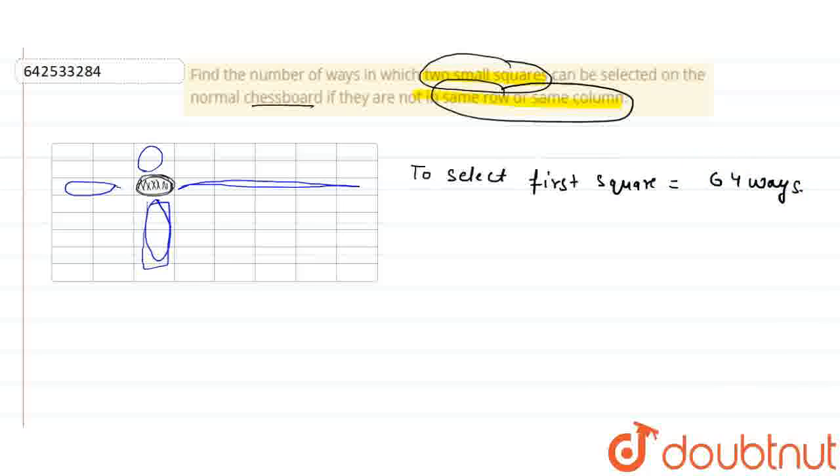And for the second square, I need to subtract, to select second square. What I need to do is, I need to subtract 15 from it.